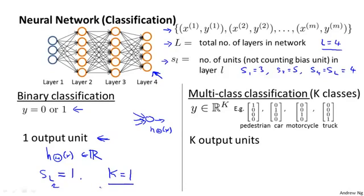The second type of classification problem we'll consider will be multi-class classification problem where we may have K distinct classes. So our earlier example had this representation for y if we had 4 classes. And in this case, we would have capital K output units and our hypothesis will output vectors that are K dimensional and the number of output units will be equal to K.